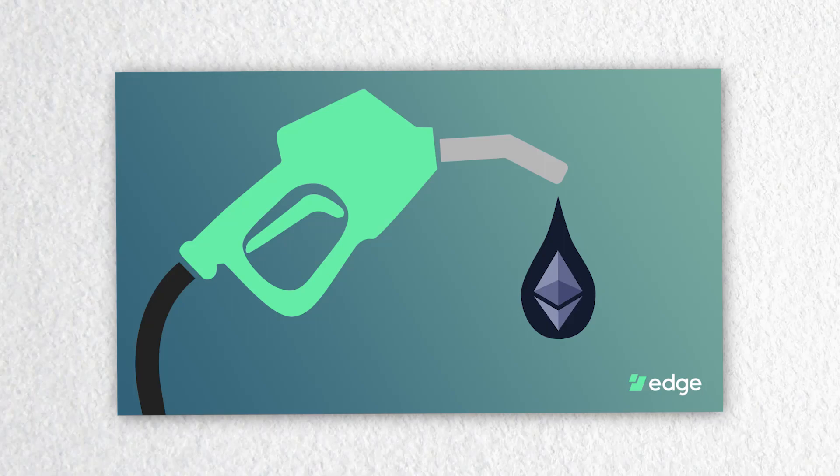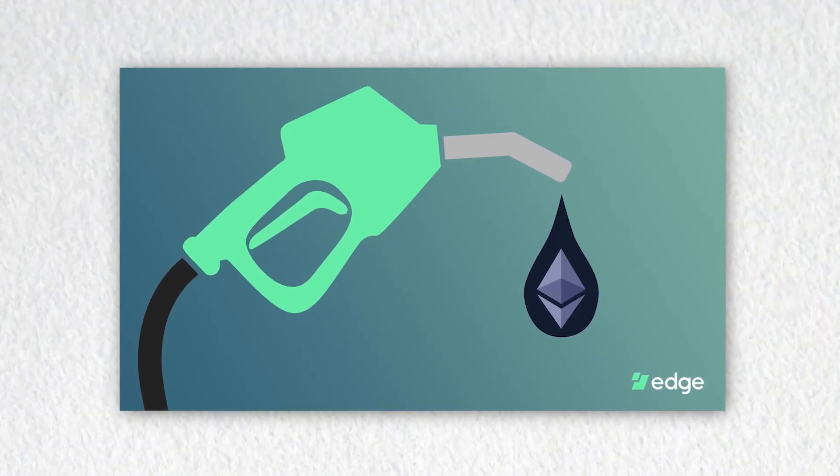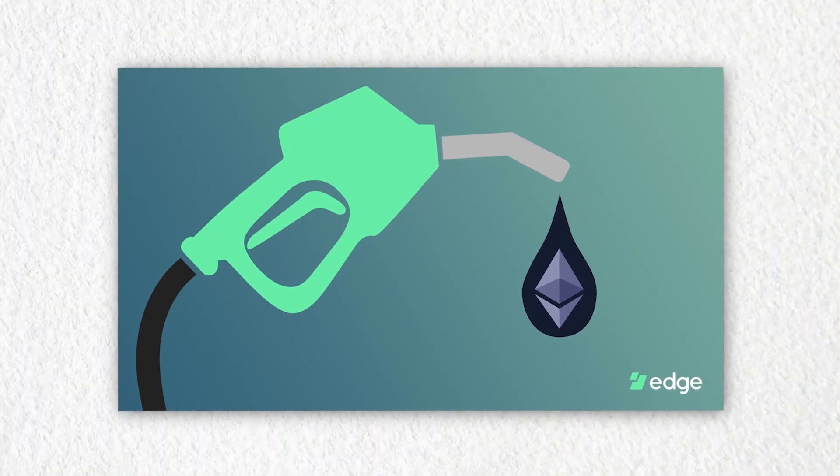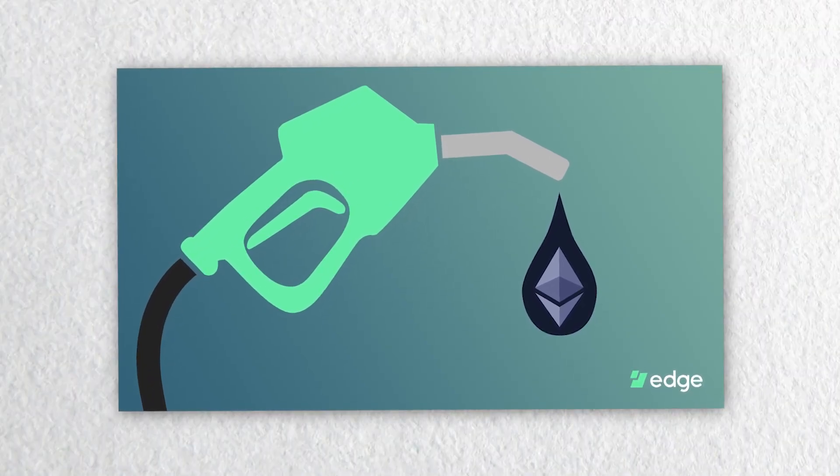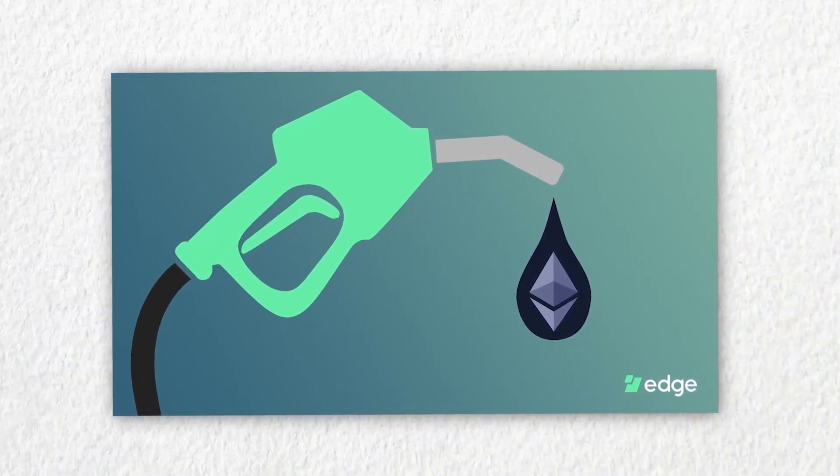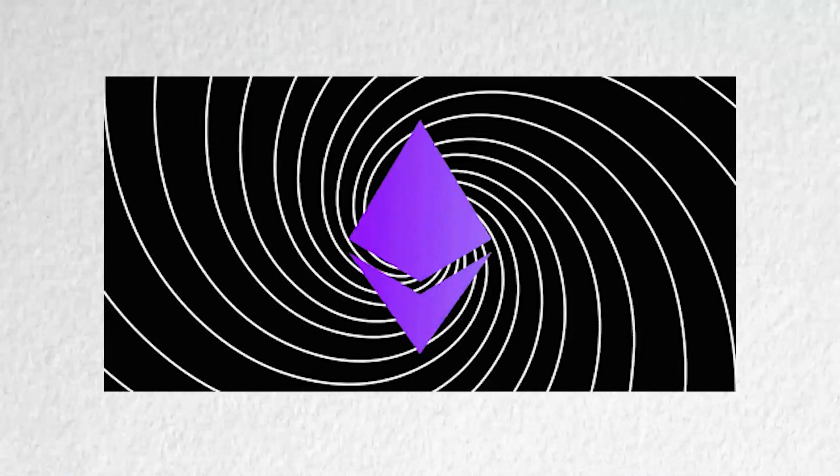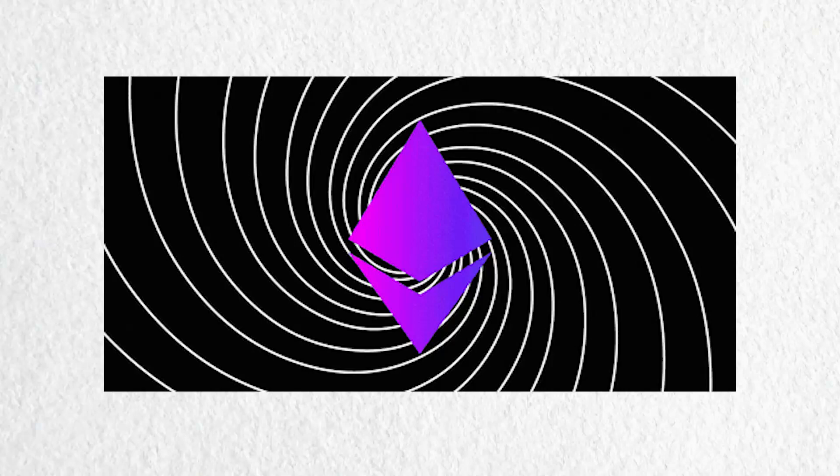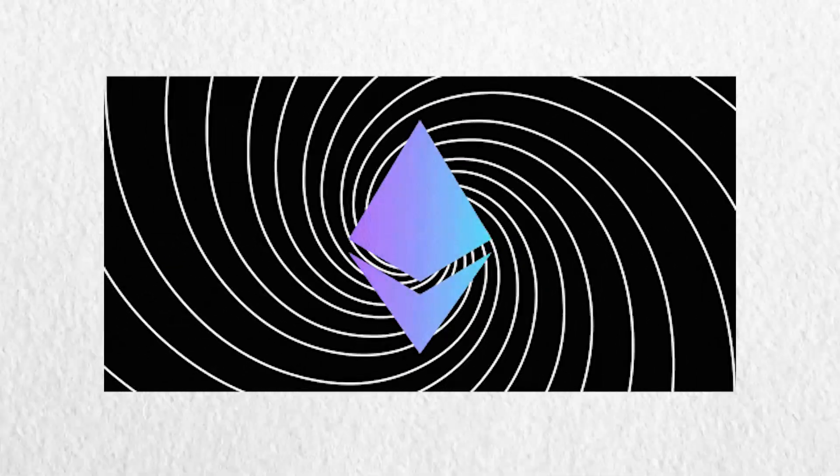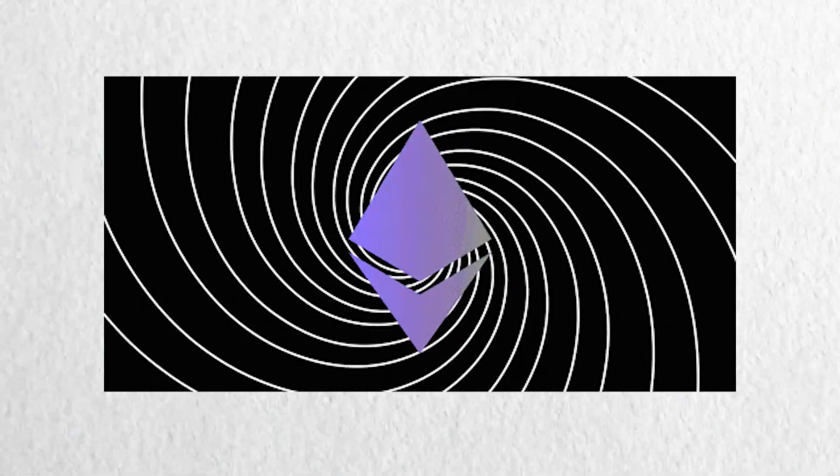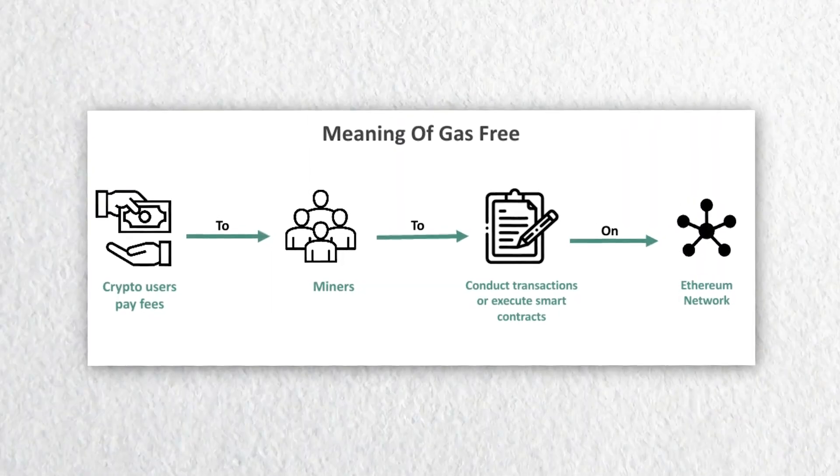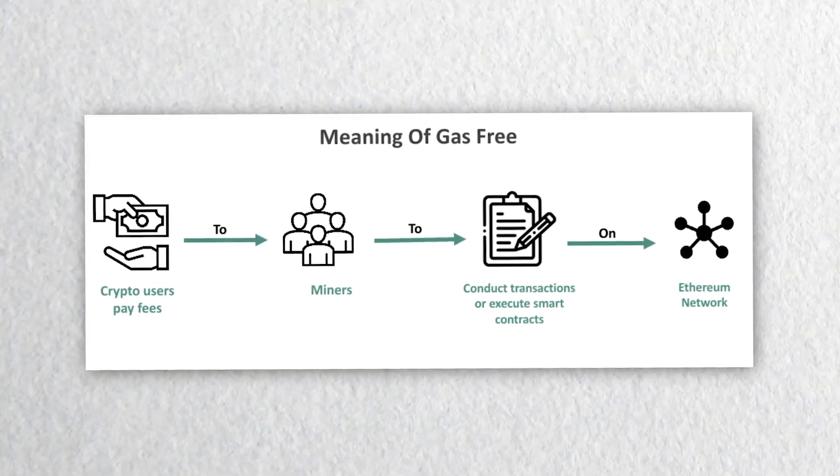By understanding gas fees, we can gain a more comprehensive insight into the inner workings of Ethereum and how it facilitates a decentralized and secure platform for developers and users alike. Ethereum is a blockchain-based platform that supports a vast ecosystem of decentralized applications or dApps and its native cryptocurrency Ether or ETH. One of the unique features of Ethereum is its use of gas to facilitate transactions and smart contract executions on its network.